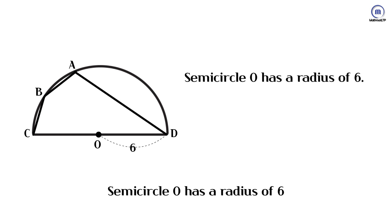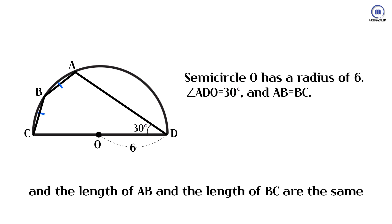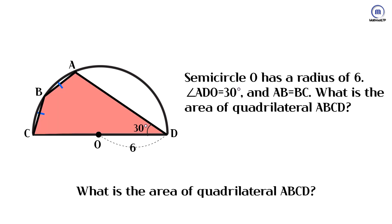Semi-circle O has a radius of 6. Angle ADO is 30 degrees. The length of AB and the length of BC are the same. What is the area of quadrilateral ABCD?